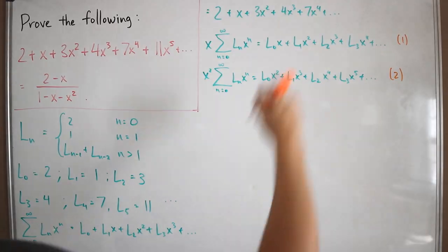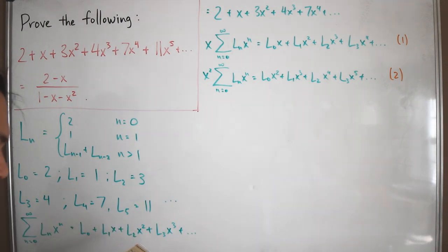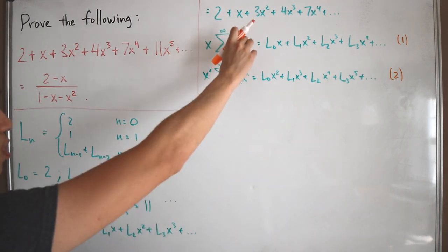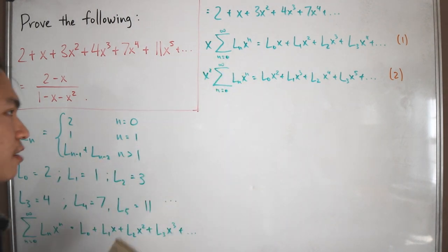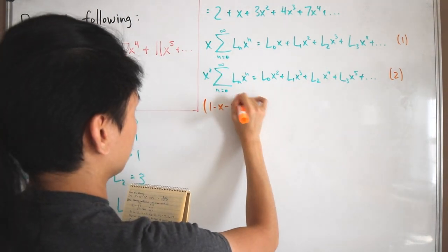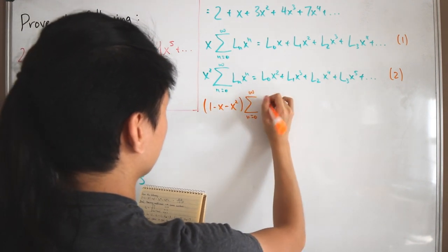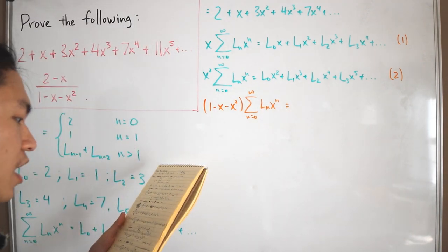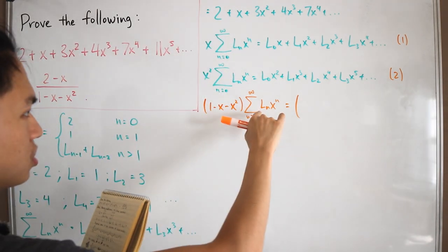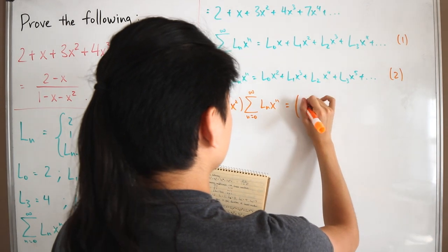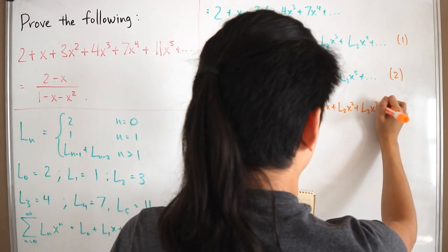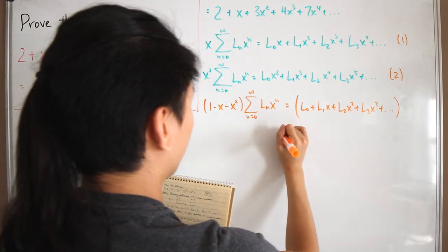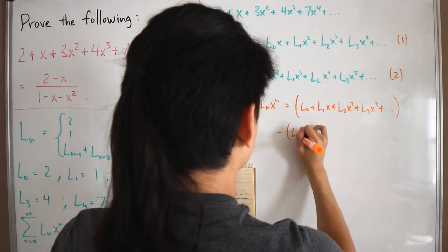Now we take the difference. We compute (1 minus x minus x squared) times the generating function, which factors as our generating function minus equation 1 minus equation 2. Distributing: first, 1 times the sum gives L_0 plus L_1 x plus L_2 x squared plus L_3 x cubed, and so on. Then subtracting the x-multiplied terms: minus L_0 x minus L_1 x squared minus L_2 x cubed, and so forth.